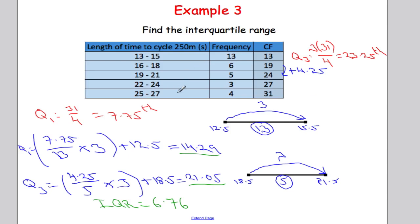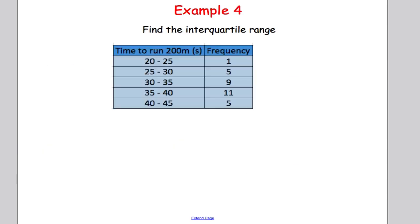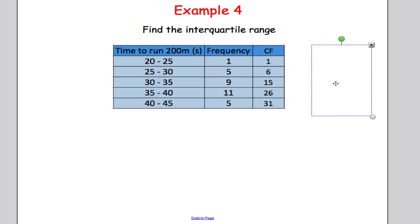Just a reminder: the textbook does these problems using interpolation, but I prefer the proportion method as it makes more sense. If you're unsure how this is done, look back at the video on grouped data. Let's do one more example — again finding the interquartile range. I'll work out the cumulative frequency first.